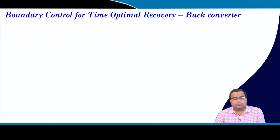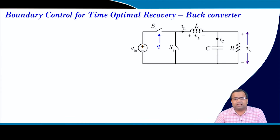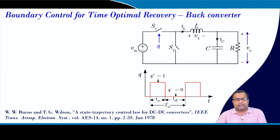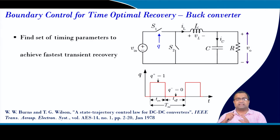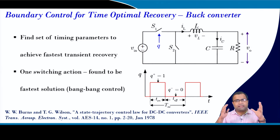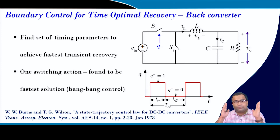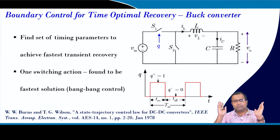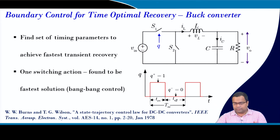We want to recapitulate the boundary control for time optimal recovery, which we discussed in the previous lecture. We need to find a set of timing parameters to achieve the fastest response, and that turns out to be a one-switching action. We need to formulate all parameters to ensure that the transient recovery happens in one switching action to achieve the fastest, time optimal recovery.